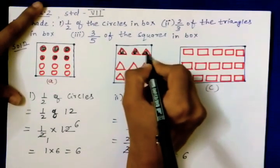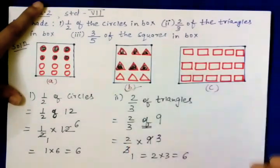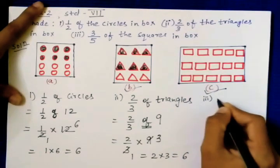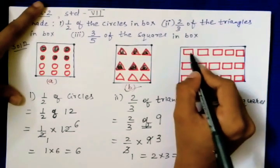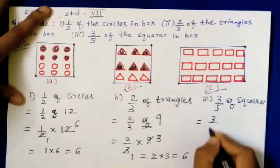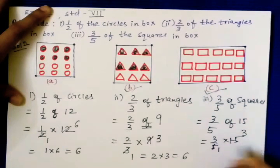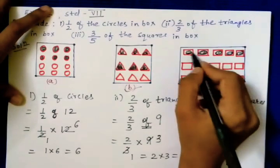Six triangles you will shade. The third one is three-fifths of the squares. Count the squares: one through fifteen — there are fifteen squares. Three-fifths of fifteen: 'of' means multiply, so three-fifths into fifteen. Cancellation: five and fifteen cancel, leaving three into three, which equals nine. So we need to shade nine squares.